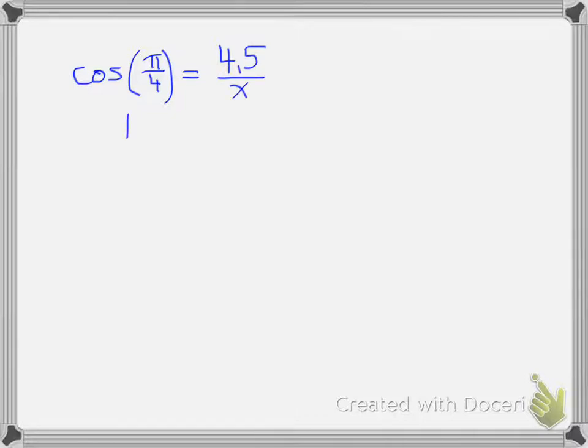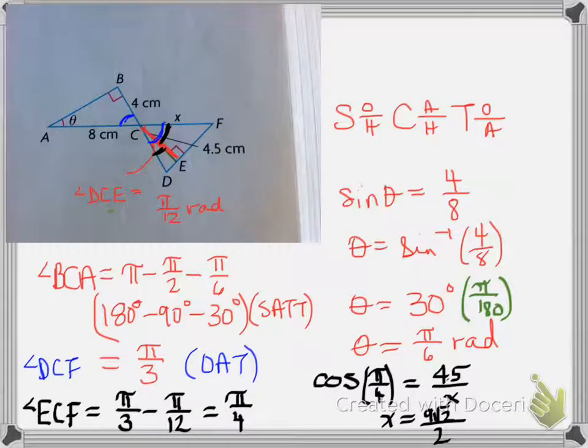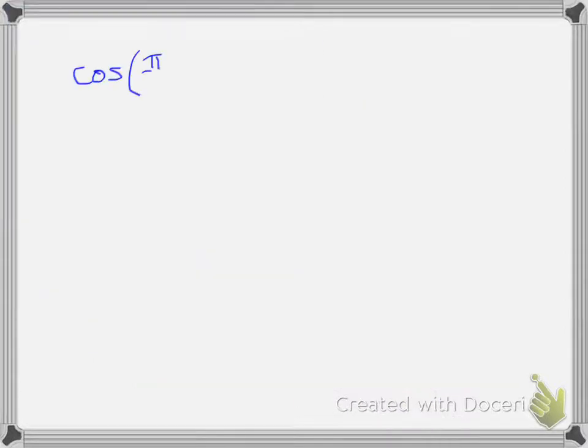So, we have, in the previous question, we had cosine of pi over 4 is equal to 4.5 over x. So, let's look at what this says. Cosine of pi over 4 is equal to 4.5 over x. Cosine of pi over 4. Let's say you didn't have a calculator, or you weren't allowed a calculator in a course, let's say in university. How would you solve a question like this?